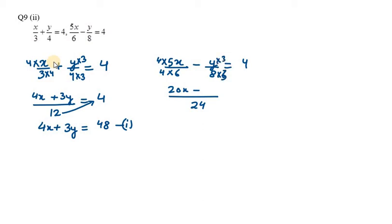Taking 24 to the right side, we get 20x - 3y = 24 × 4 = 96. So this is my second equation.